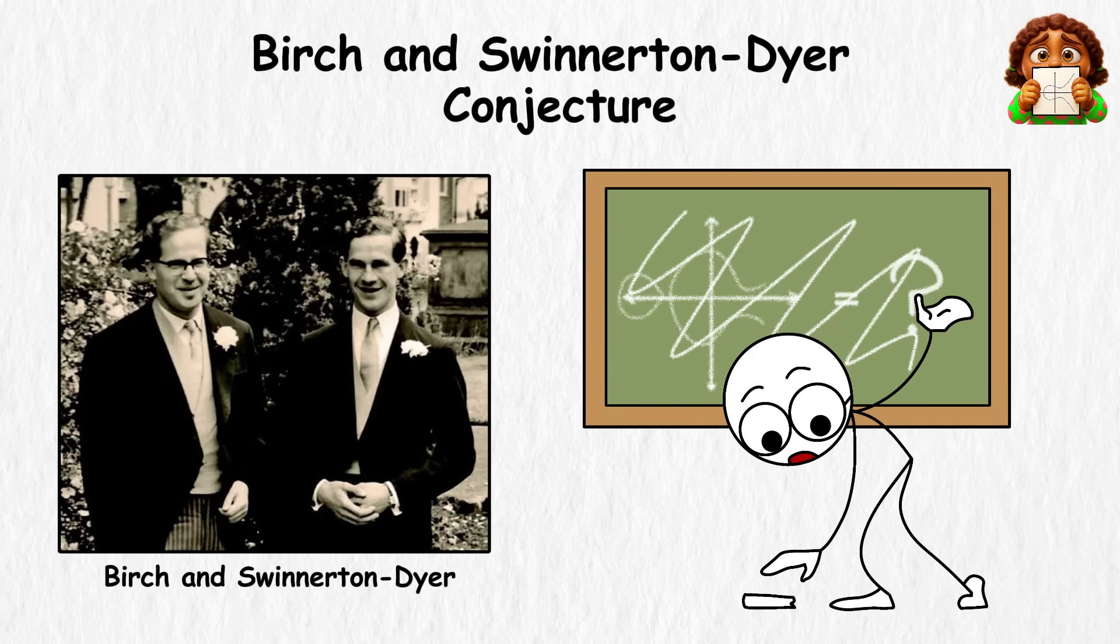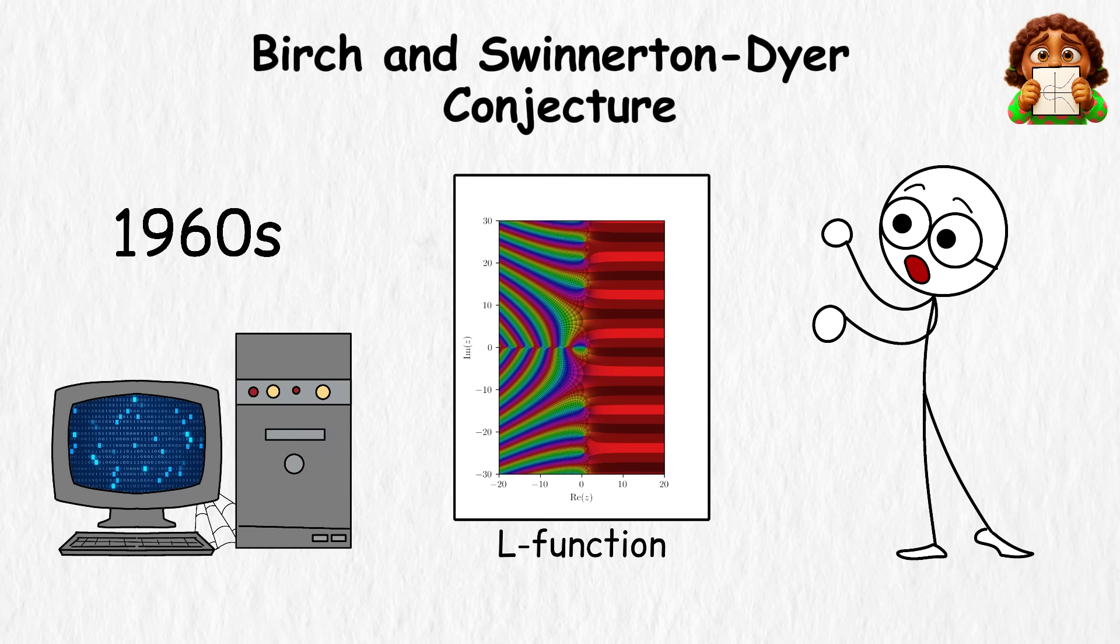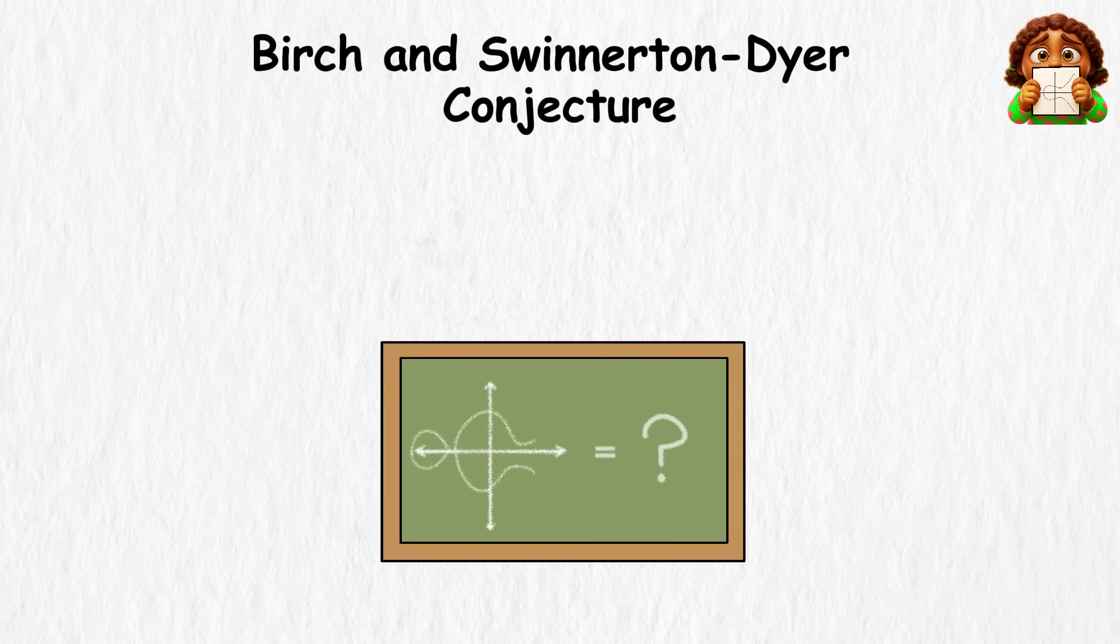Birch and Swinnerton-Dyer noticed a strange pattern in the 1960s when they ran early computer tests. They guessed that by looking at something called an L-function, you could actually predict how many solutions a curve would have. That guess became their famous conjecture.